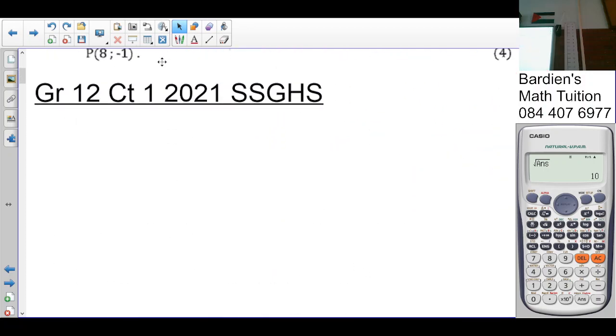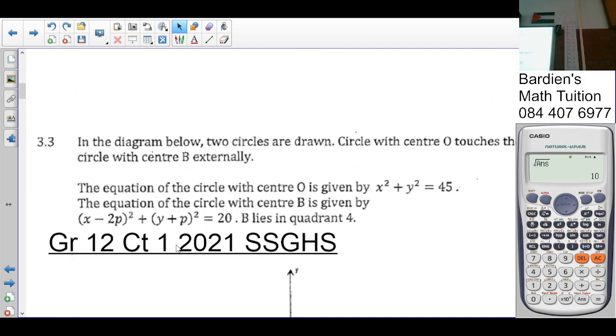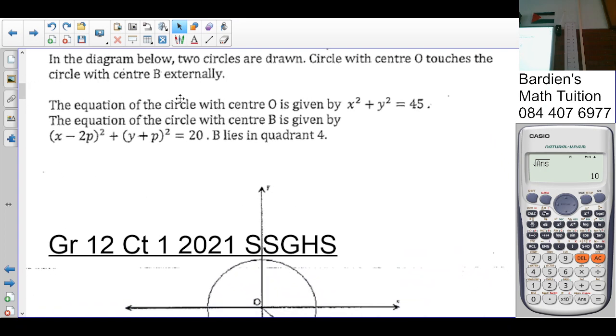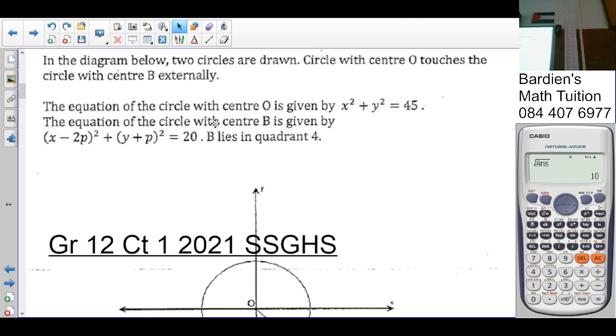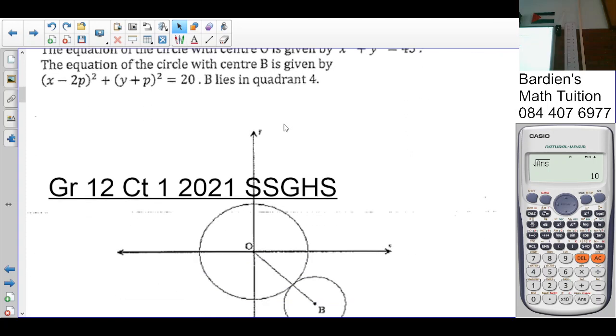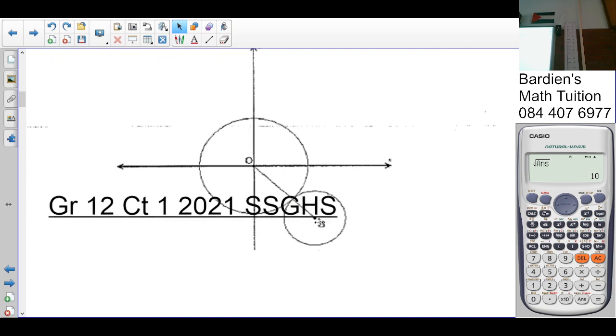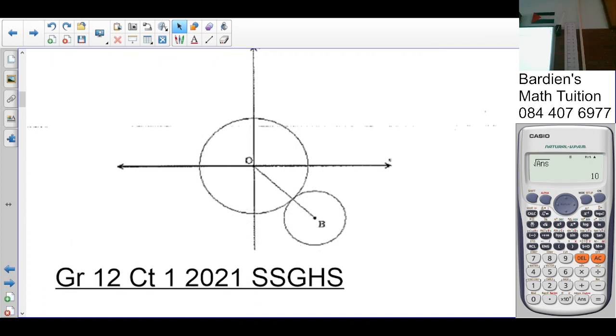So the next question says, in the diagram below, two circles are drawn. The circle with center O touches circle with center B externally. The equation of the circle center O is given by x squared plus y squared equal to 45. Which means to say from O to that point there is going to be the square root of 45, or 3 root 5.